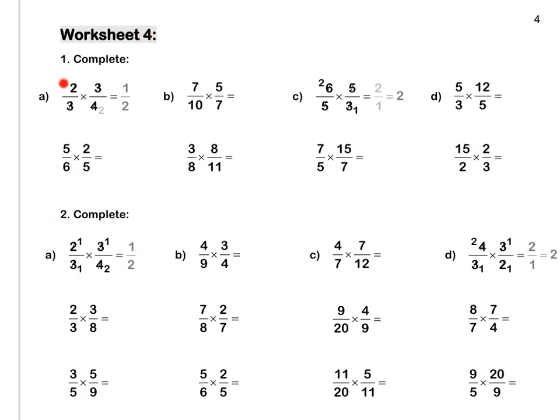Worksheet 4. In this question, we have simplified our 3s by dividing both by 3, leaving 1 and 1. Then we can simplify the 2 and the 4 by dividing both by 2. 2 divided by 2 is 1; 4 divided by 2 is 2. Then we multiply out: 1 times 1 is 1, and 1 times 2 is 2. Let's do this question together. We can simplify our 7s — divide both by 7. Then 10 and 5, we can divide both by 5 to get 1 and 2. We multiply out to get one half.